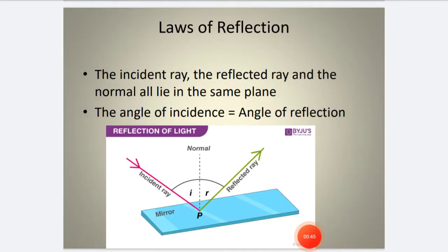Now the laws of reflection. The incident ray, the reflected ray, and the normal all lie in the same plane. The incident ray, reflected ray, and the normal - which is the line between the incident ray and reflected ray - they all lie in the same plane with the mirror.